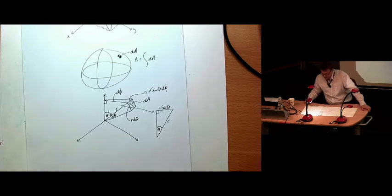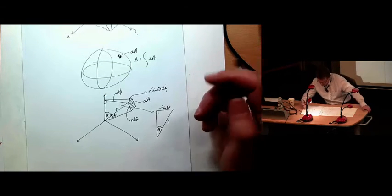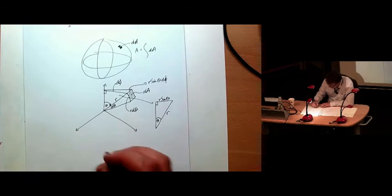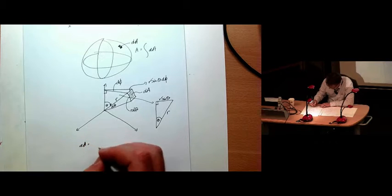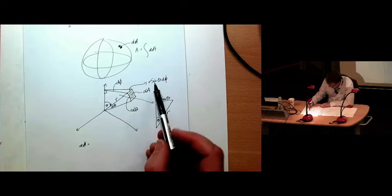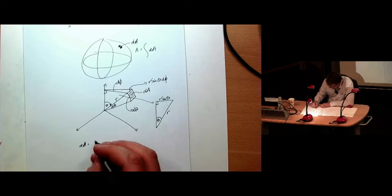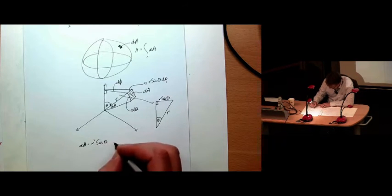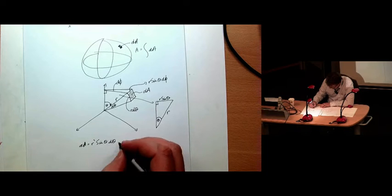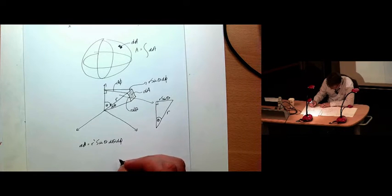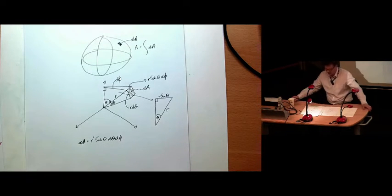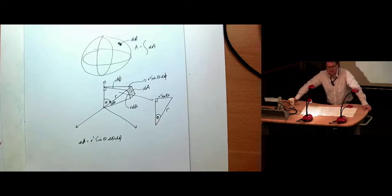Which means that this length is going to be r sine theta d phi. So now we know both the width and the height, or whatever you want to call it, of our little area. So I can now write that dA is equal to r d theta, r sine theta d theta. So I've got r squared, sine theta d phi. So that is the area of my little area.